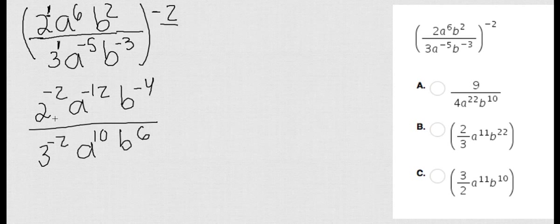Anytime you have negative exponents the trick is to move them from the top to the bottom or from the bottom to the top to switch the sign. So look what's going to happen.